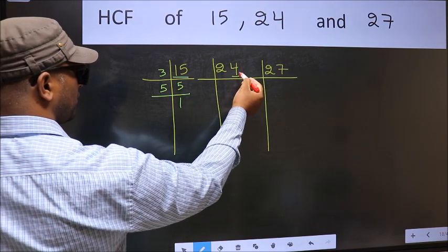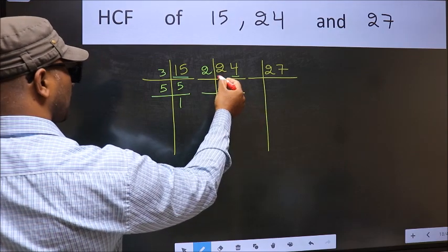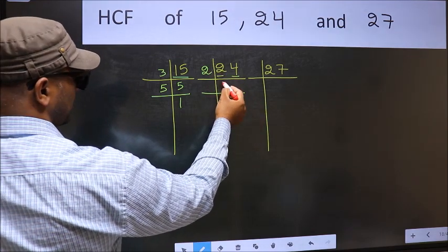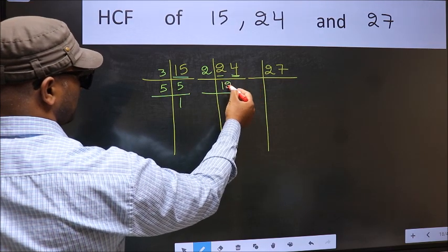Now the other number 24, last digit is even so take 2. First number 2, when do we get 2 in 2 table? 2 times 1 is 2. The other number 4, when do we get 4 in 2 table? 2 times 2 is 4.